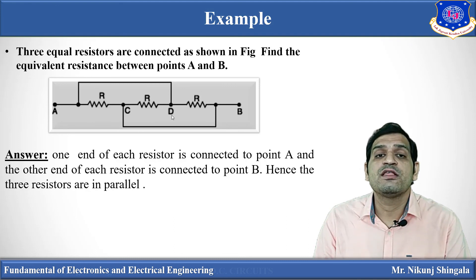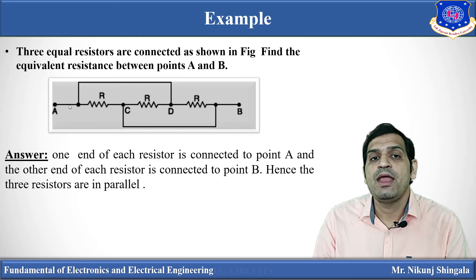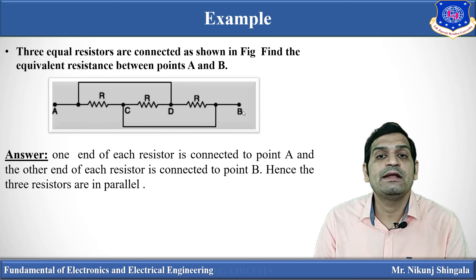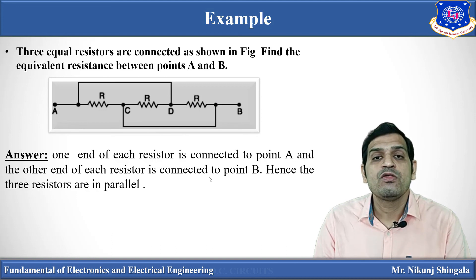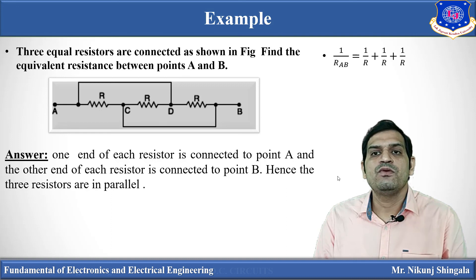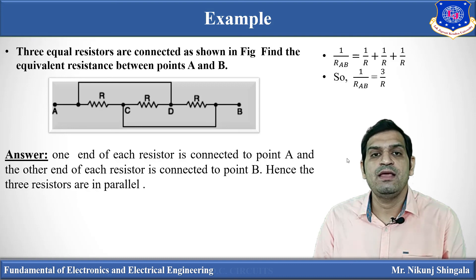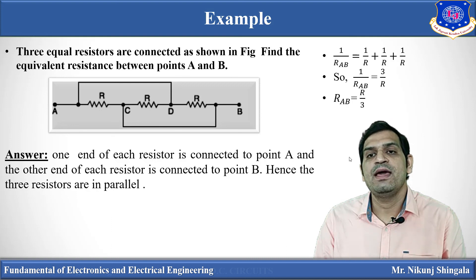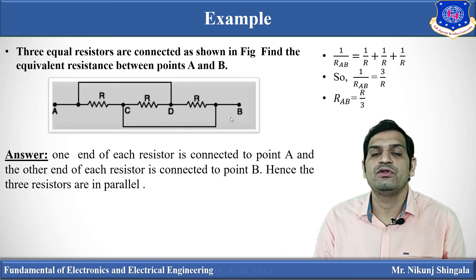All resistors are connected in parallel because one end of each resistor is connected to point A (with A and D shorted) and the other ends are all connected to point B (with B and C shorted). So using the parallel resistance equation: 1/R_AB equals 1/R plus 1/R plus 1/R, giving 1/R_AB equals 3/R. Therefore R_AB equals R/3 ohms — this is the equivalent resistance for the given circuit.